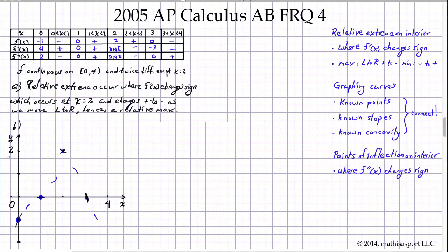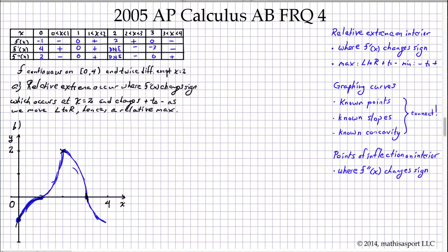From there we're just left to connect the dots and lines. Notice that it really has to flatten out a lot as we get up here, because not only does the slope go to zero but the concavity as well. We're not at all concerned that we've got a cusp at x equals 2, because that's consistent with what we're told — the first and second derivatives don't exist there, so we don't have to line up those slopes.